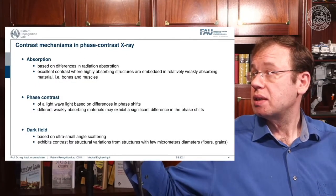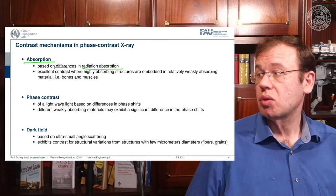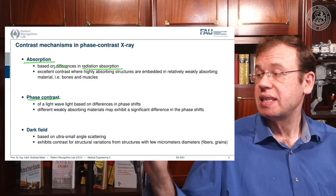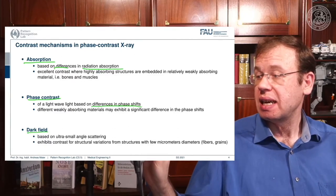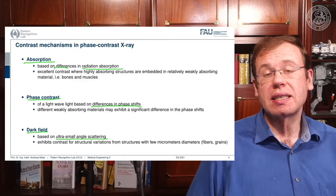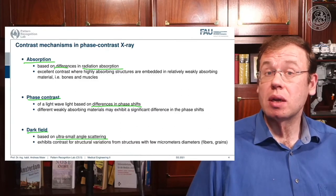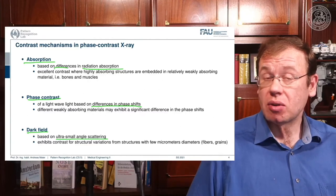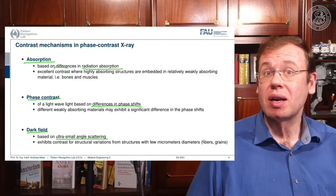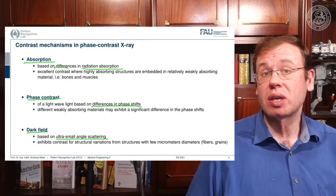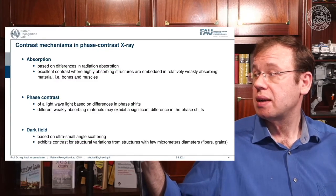To summarize: in the absorption image we see differences in radiation absorption; in the phase contrast image we see differences in phase shifts; and in the dark field we see ultra-small-angle scattering caused by microscopic structures that are way smaller than the actual detector pixel or reconstruction voxel grid. We can measure effects that are an order of magnitude smaller than the actual reconstruction scale. We'll see some very interesting results towards the end of this video.